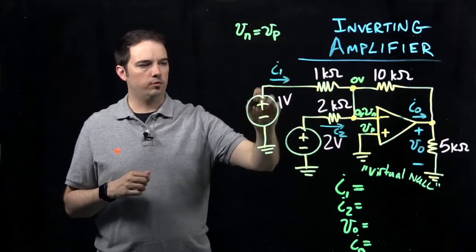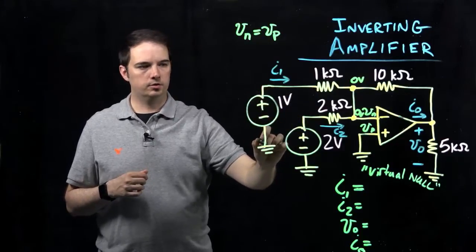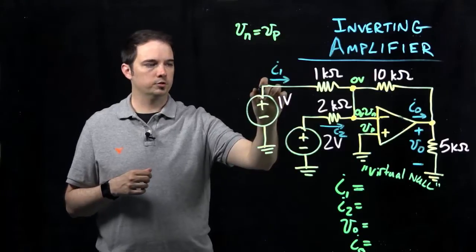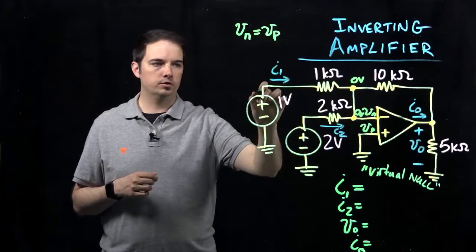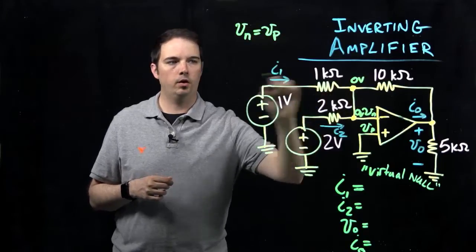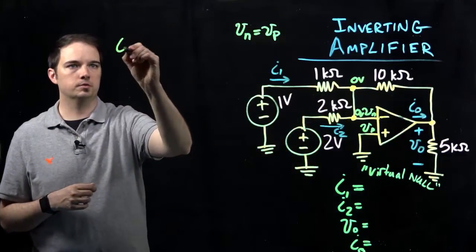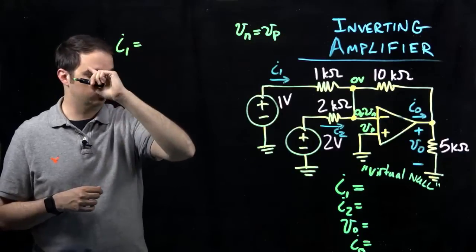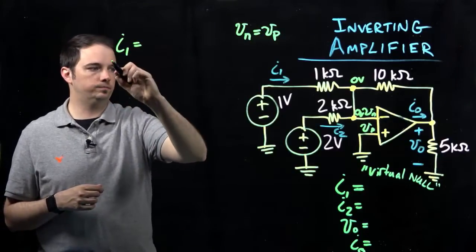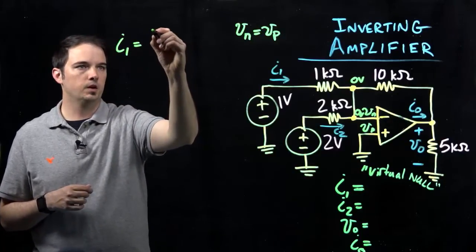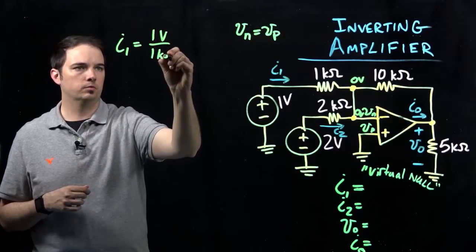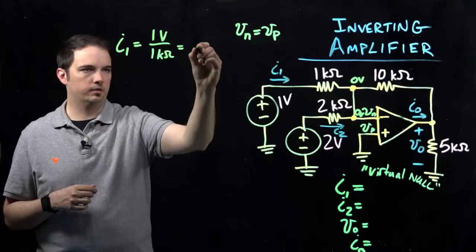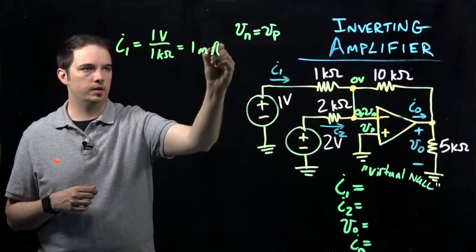I1 is the current flowing through this one kiloohm resistor. We have this one volt source coming from ground, increasing by one volt, and going back to ground. So that one volt increase has to be the voltage drop across my one kiloohm resistor. By Ohm's law, I1 equals one volt divided by one kiloohm, giving us a current of one milliamp.